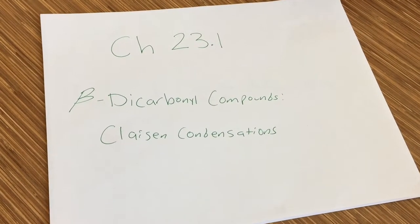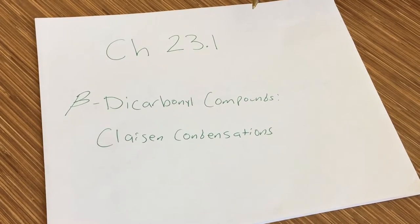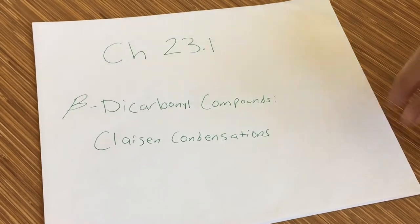Today we're going to be talking about chapter 23, section 1, reactions of beta-dicarbonyl compounds, more specifically, the Claisen condensation.